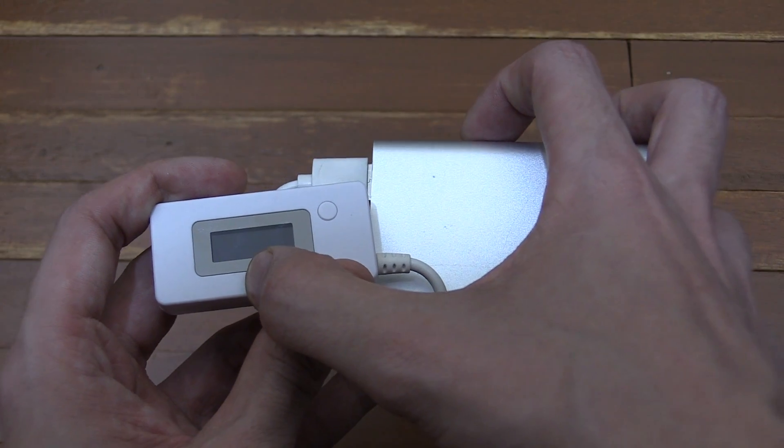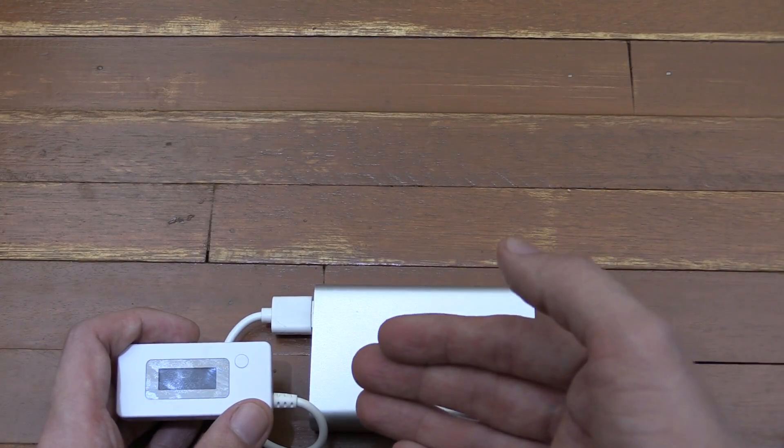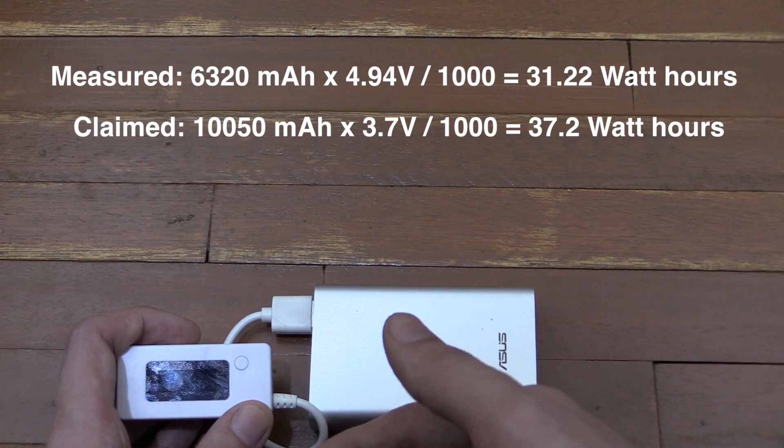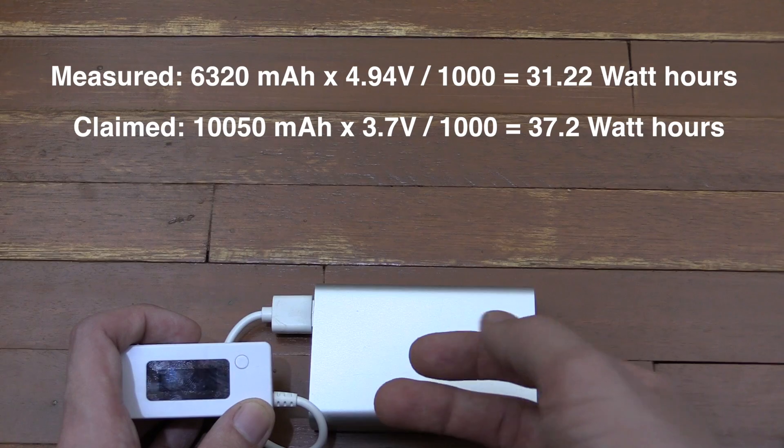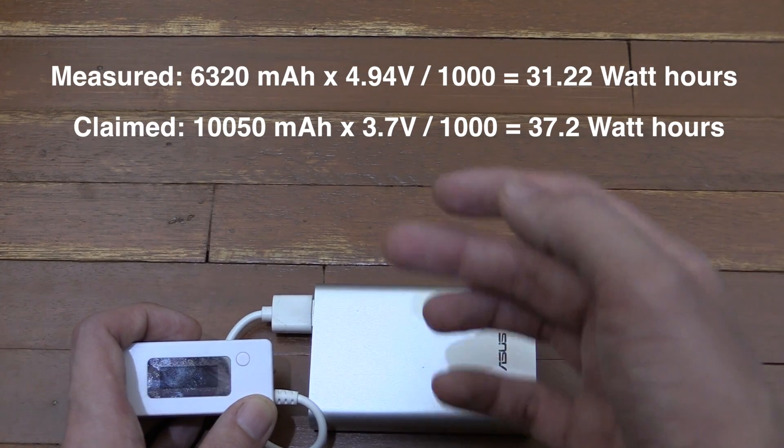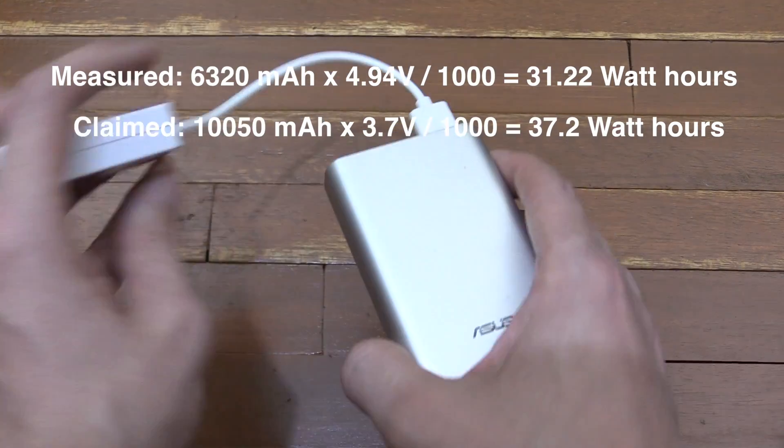So we do the same sum again, 6,320 multiplied by the voltage, which is 4.94, divide that by 1,000, and it gives us 31.22 watt hours, which is about 84% of what it's actually meant to be rated at.